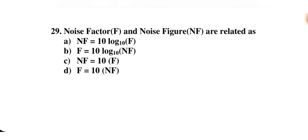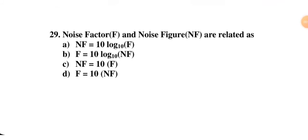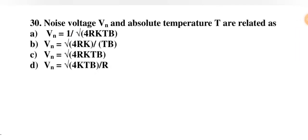Noise factor F and noise figure NF are related as — NF = 10 log₁₀ F; F = 10 log NF; NF = 10F; or F = 10F. The noise figure is related to noise factor by the equation: NF = 10 log₁₀ F. This is the correct option. Also, Vn and absolute temperature T are related by Vn = √(4RkTB), where B is bandwidth, T is room temperature, k is Boltzmann's constant, and R is equivalent resistance.